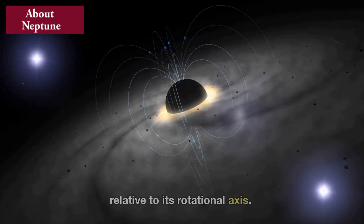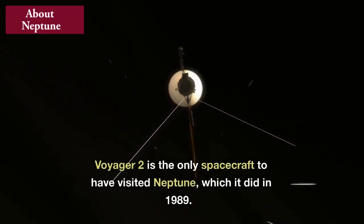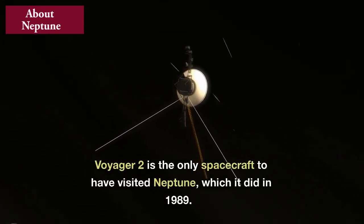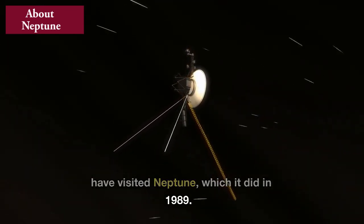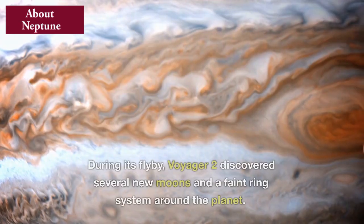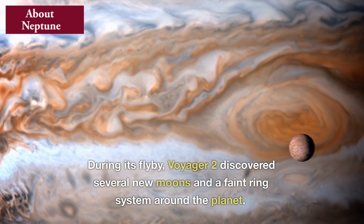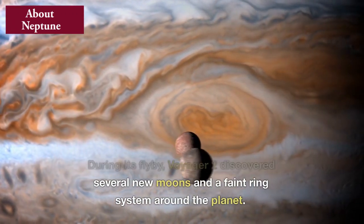Voyager 2 is the only spacecraft to have visited Neptune, which it did in 1989. During its flyby, Voyager 2 discovered several new moons and a faint ring system around the planet.